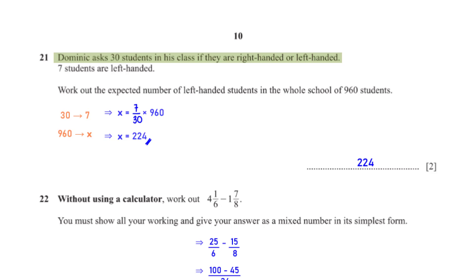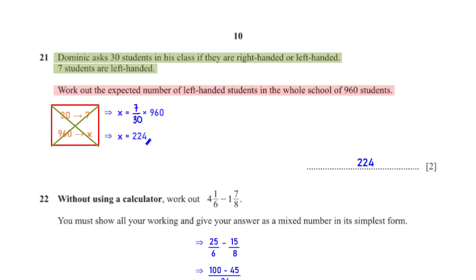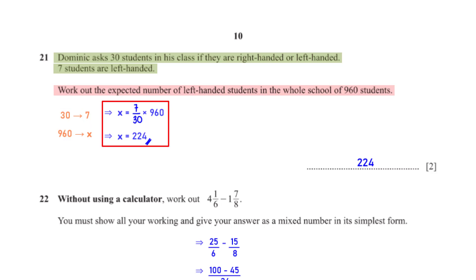Dominic asks 30 students if they are right-handed or left-handed; 7 students are left-handed. Work out the expected number of left-handed students in a school of 960. Setting up a proportion: 7/30 = x/960, then cross-multiplying and solving gives x = 224.